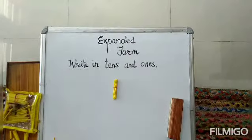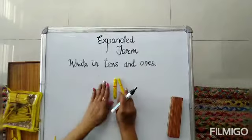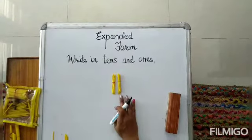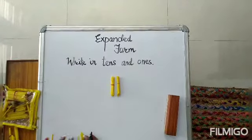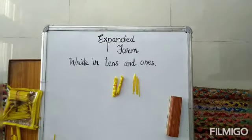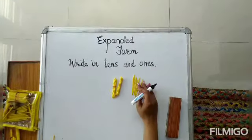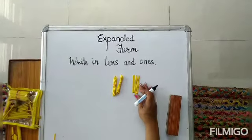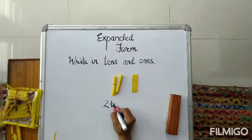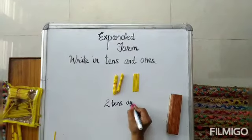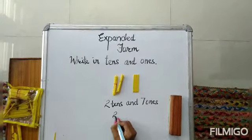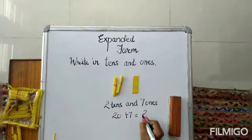Now again see. I have 2 tens, or 2 bundles of 10 each, and now I am giving you 7 loose sticks — 2, 4, 5, 6, 7. So 2 bundles of 10 and 7 loose sticks means 2 tens and 7 ones. That is 20 plus 7, that makes 27.